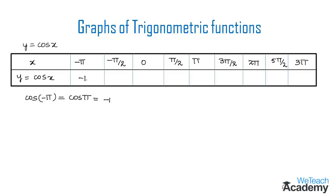The result for cos(180 degrees) is minus one, so y equals minus one. Next, substituting x equal to minus pi by 2: cos(minus pi by 2) equals cos(pi by 2), and cos(90 degrees) is zero, so y equals zero.